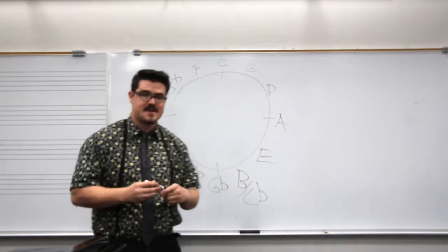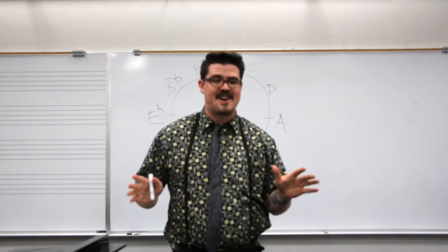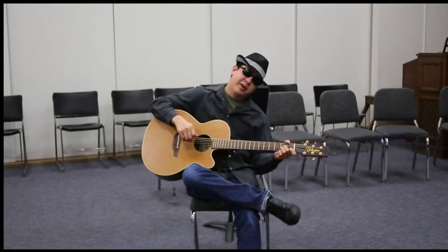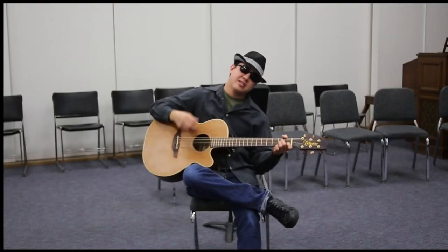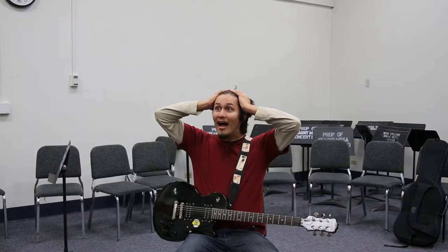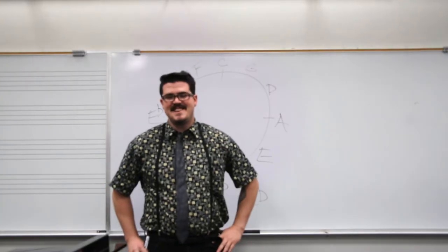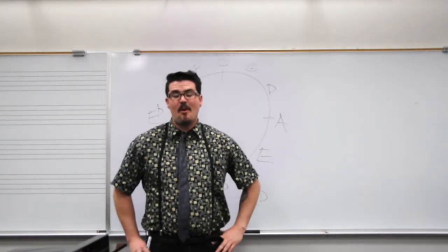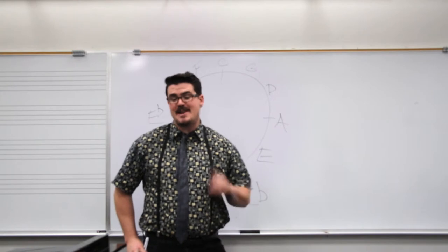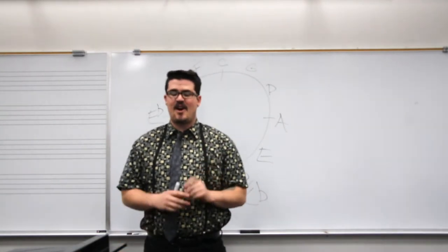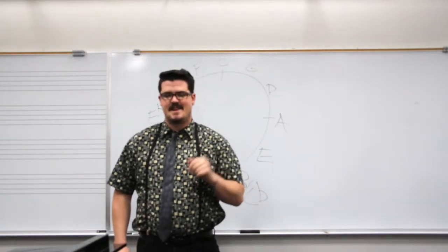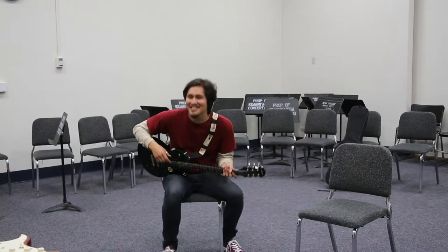Which brings up a good point — enharmonic equivalents. And don't forget about the minor keys. There's more? Yes indeed. There's more to the circle of fifths than just the major keys. The circle of fifths also gives you your minor keys. I don't quite understand.